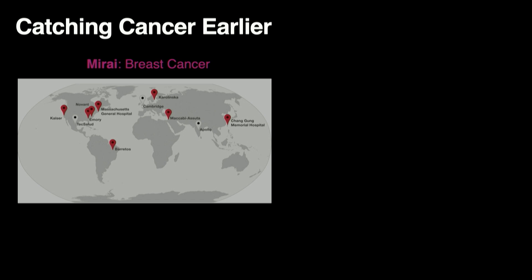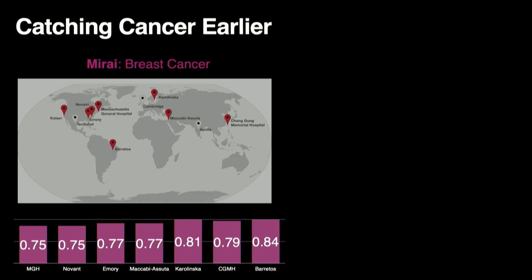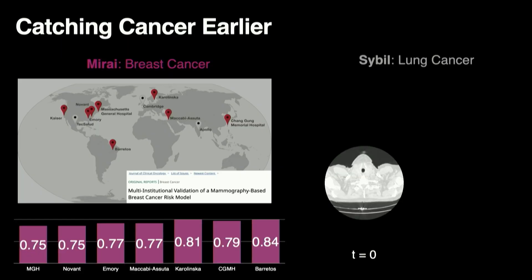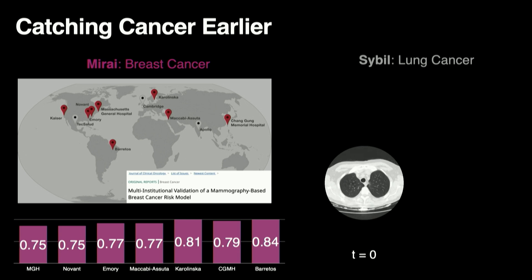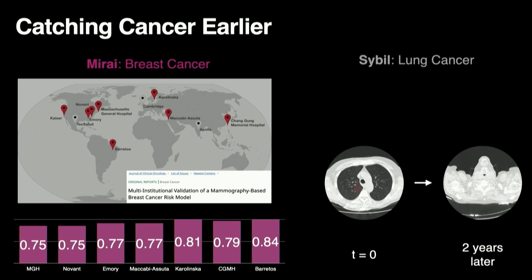We did this, and for breast cancer we have a model called MIRI that has now been validated in seven different institutions across five countries. Here we see the discriminative ability of this model to predict breast cancer within five years — this was a very large-scale validation. For lung cancer we do something similar with a model called SIBL, but instead of a mammogram we take a CT, which is a 3D volume, and at some time t0 we predict what will happen in the future — in this case finding that two years later someone is diagnosed with lung cancer in the same spot.